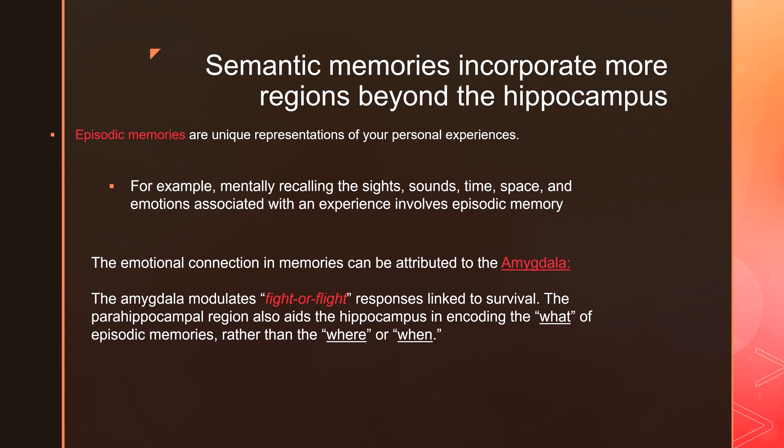The next topic is episodic memory. Think of your favorite episode from your favorite TV show — there's a specific setting, specific sounds, specific things you can see. An episodic memory is a unique representation of a personal experience that includes all of those factors. The emotional connection to memories is largely handled by the amygdala, which is part of the limbic system and is usually associated with fear.